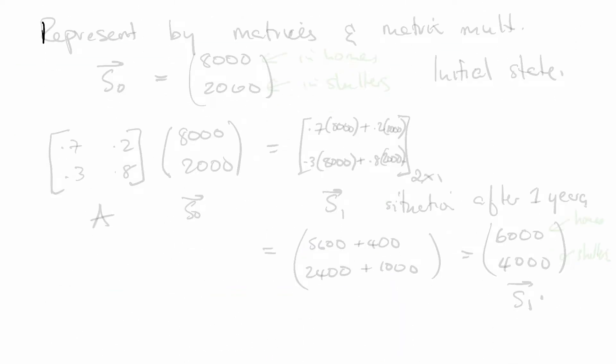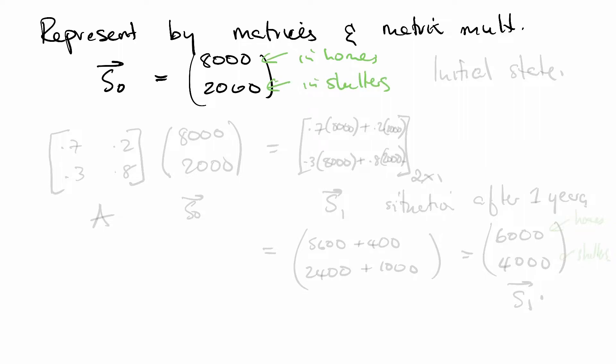Here's what we can do. We can represent this with matrices and matrix multiplication. So for example, we can set up our initial vector S₀ in the starting situation. That represents how many puppies there are in our initial state. So there are going to be 8,000 puppies in homes and 2,000 puppies in shelters. And we're representing it in this vector. So this is our initial state.